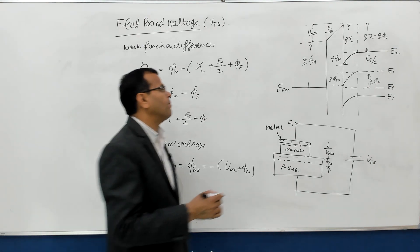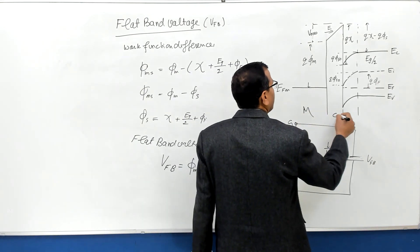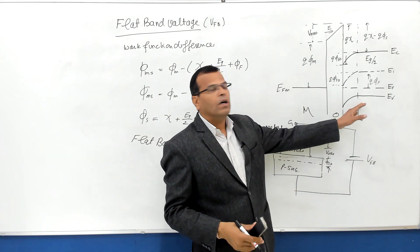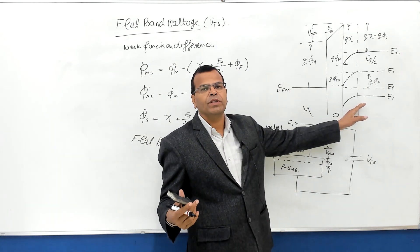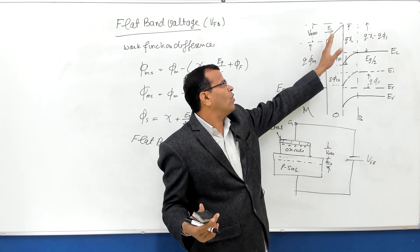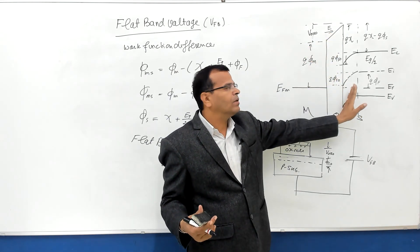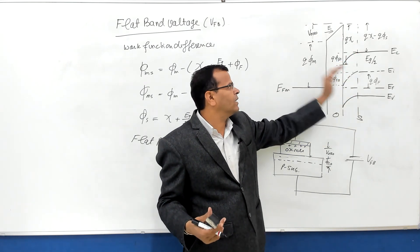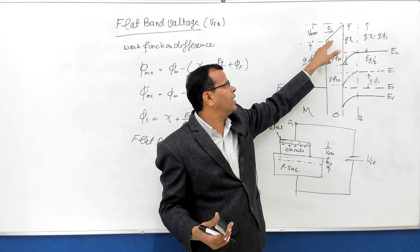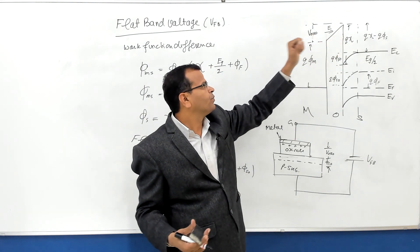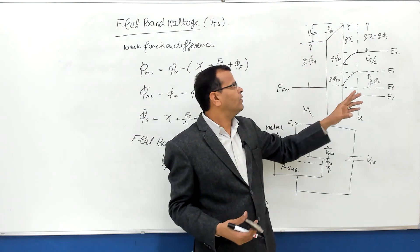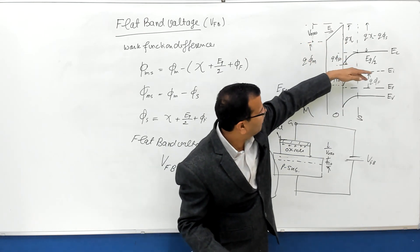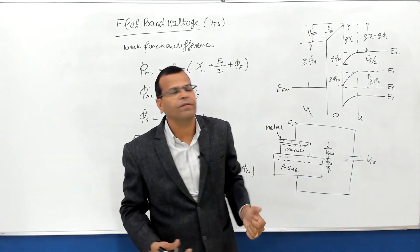In a practical device, the work function of metal is always less than the work function of the P-type substrate. When you connect metal, oxide, and semiconductor with the work function of metal less than the work function of semiconductor — you can see my previous video — there is bending of the energy bands on the semiconductor side downward, and there is also bending of the conduction band on the oxide side.